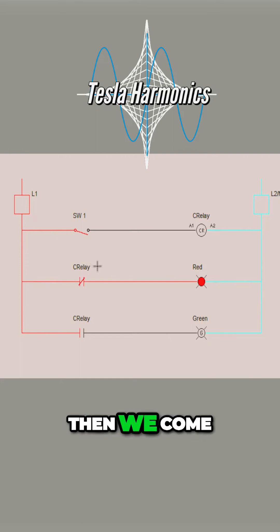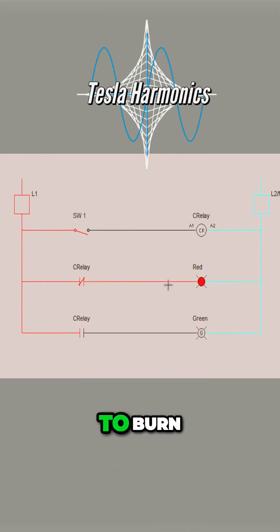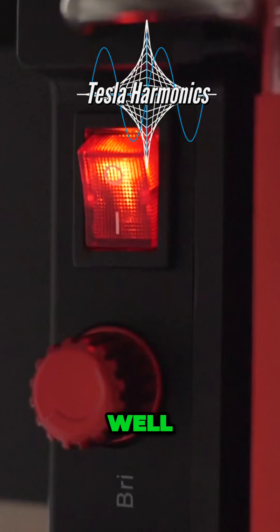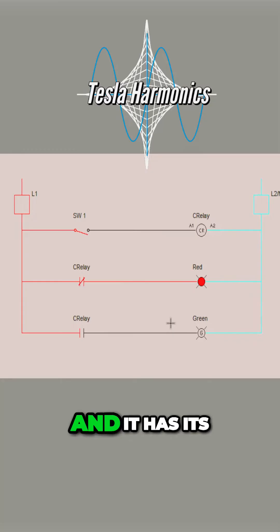Then we come out the other side and we take the hot to the light. What does the light bulb need to burn? A hot and a neutral. Well, this light right now when I turn on power, it has its hot and it has its neutral because this control relay has not been energized.